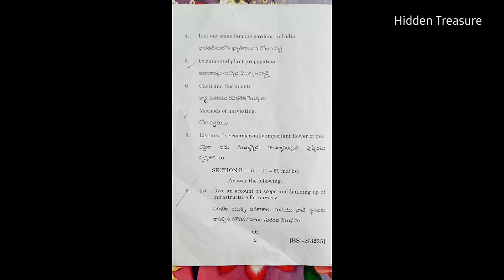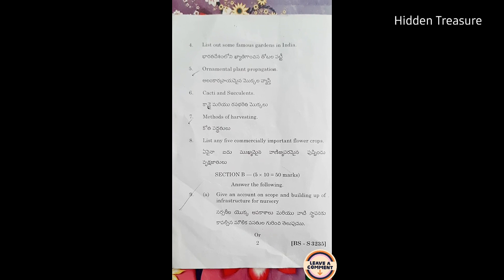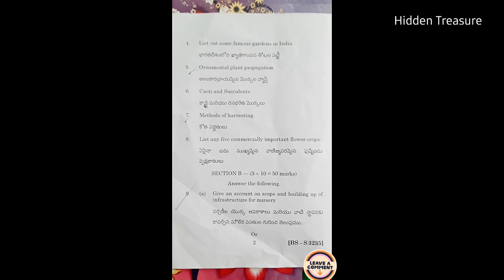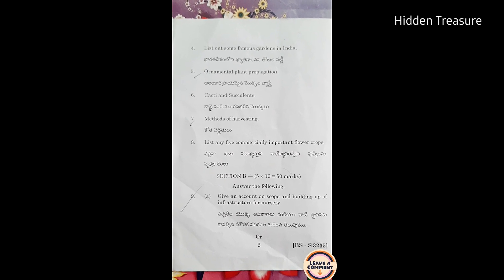Sixth question: cacti and succulents. Seventh question: methods of harvesting. Eighth question: list any five commercially important flower crops. So eight questions are there in Section A; choose any five and answer.